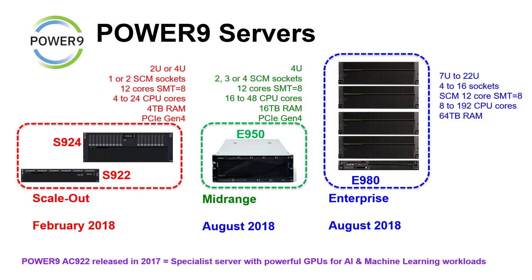Quick reminder about the Power9 servers — small, medium and large, scaled-out, mid-range and enterprise. They all arrived in 2018, apart from the AC922 used for AI and machine learning which came out three months earlier. Also note that Power9 is uppercase letters, no space. People who don't do it that way just look like idiots in my humble opinion.